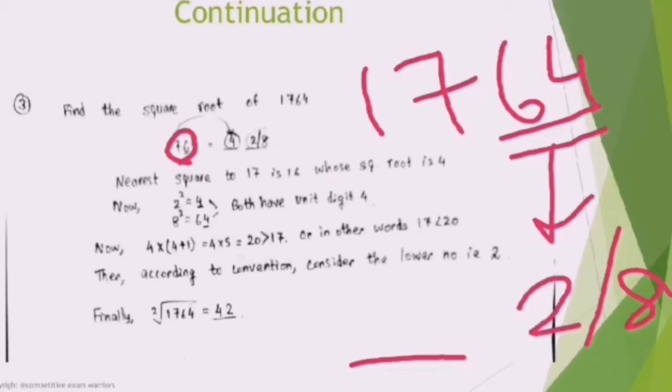Now, 17, nearest square to 70 is 16, and square root of 16 is 4. So 4 will come here. The answer will be either 42 or 48. You need to see whether it will be 42 or 48.